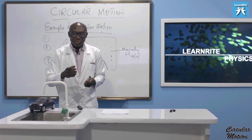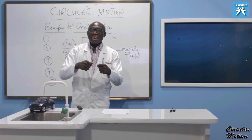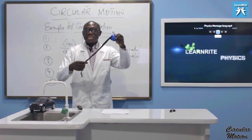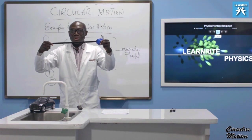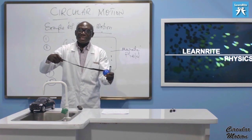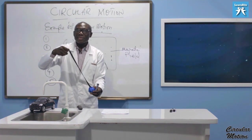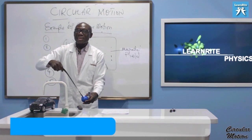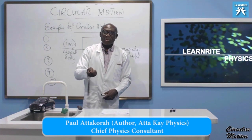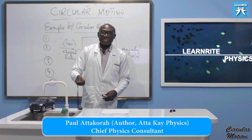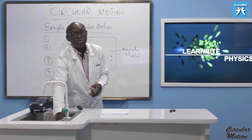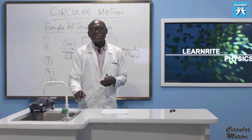If I have a body tied to a rope and I whirl it in a circle — it can be a horizontal circle or a vertical circle, as you can see — this body is performing circular motion. We have a lot of examples to give, and I will leave the rest for you to explore.